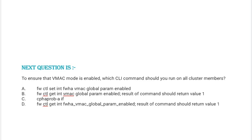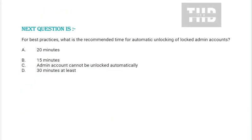Next question involves the command: fwctl set fwha vmac global param enabled. See all the other commands as options B, C, and D. Correct answer is option B.